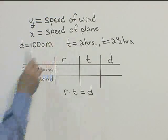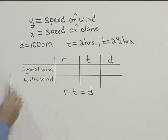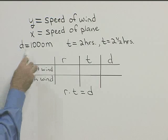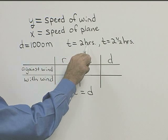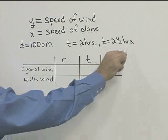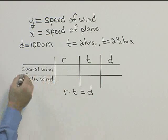So let's let Y be the speed of the wind, X be the speed of the plane. We know the plane flew a distance of a thousand miles. It took two hours with the wind and two and a half hours against the wind. So let's see if we can write that relationship.